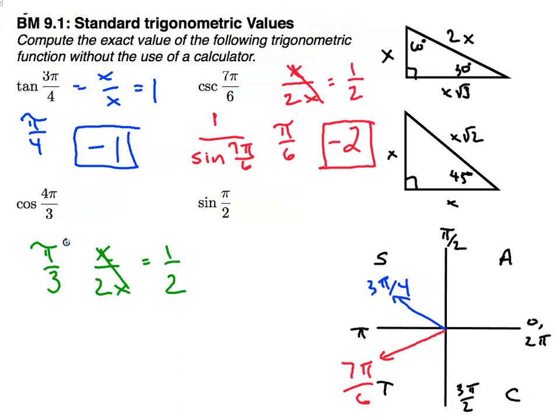And then I need to find out which quadrant 4π over 3 is. And since 4 over 3 is just past 1, I'm going to be in quadrant 3. Since tangent is positive in quadrant 3, everything else is negative. My cosine is negative 1 half.